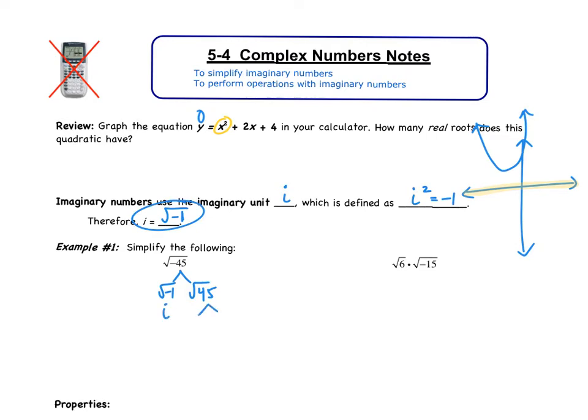45 now we need to break down. I'm going to use the pairs method. So I have a pair of 3's and a leftover 5. The 3 goes outside the root, the 5 that's left over goes underneath the root, and then we have this i. That is our answer.